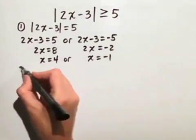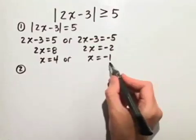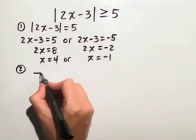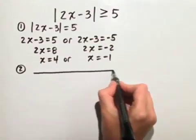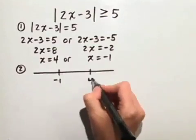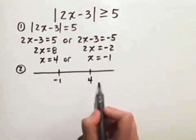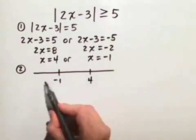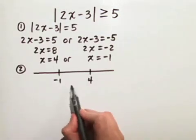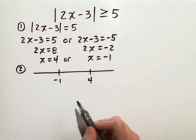Now we're ready for step 2. We have the boundary points x equals 4 and x equals negative 1, and let's place those on a number line. Notice our number line is now divided into three different intervals: to the left of negative 1, in between negative 1 and 4, and to the right of 4.